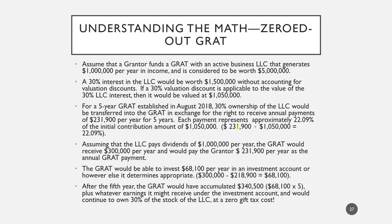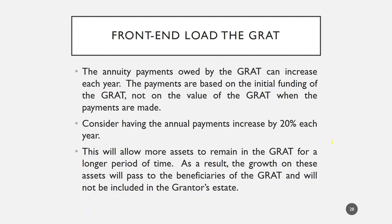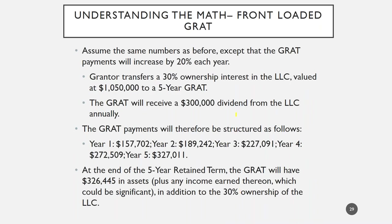We ran through some other numbers which are self-explanatory with the same concept. As discussed, GRAT annuity payments can increase by 20% each year, and it typically works better to backload the GRAT that way — you'll have more assets in the GRAT for the first number of years, passing more wealth to the beneficiaries. We show the benefit of that structure along with what the payments would look like for a five-year period.